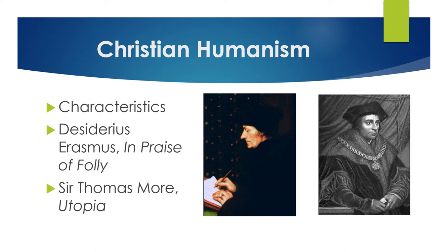In this utopian community, war, poverty, religious intolerance, and other problems of the early 16th century do not exist. Interestingly, More himself was not a religiously tolerant person — he was essentially the grand inquisitor while England was still Catholic under Henry VIII, intensely persecuting Protestants. When Henry switched to Protestantism, More chose to be executed rather than comply. So despite his ideal society rejecting religious intolerance, More himself was a devout Catholic who, like most Christian humanists, wanted reform of the church, not a new church.